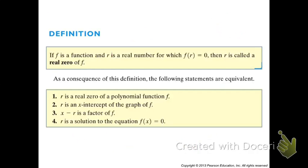r is a real zero of the polynomial function — that also means r is an x-intercept. But the next connection is neat: it means that x minus r is a factor of the function. It also means that r is a solution to the equation f of x equals zero. So all these things mean the same thing. When you understand the connection, it makes it almost impossible for me to ask you a question that you can't figure out.